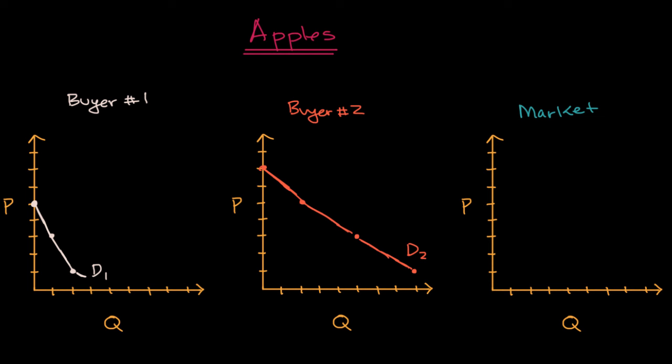We can see that from buyer one's demand curve, that at a price of one, two, three, four, five dollars per pound, they don't want to buy any pounds. At a price of three dollars per pound, they're willing to buy one pound per week, and at a price of one dollar per pound, they're willing to buy two pounds per week.